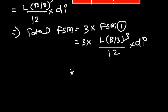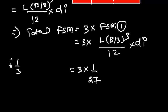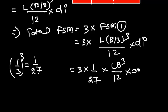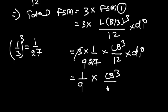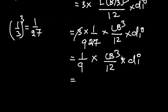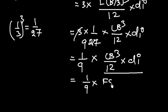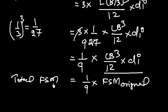Simplifying further: 3 × (1/3)³ = 3 × 1/27 = 1/9. So the total free surface moment becomes 1/9 × LB³/12 × Di. Since LB³/12 × Di is the original free surface moment, we can write: total FSM = 1/9 × FSM original. We conclude that if a tank is divided into 3 equal parts, the free surface moment is reduced by a factor of 1/9.